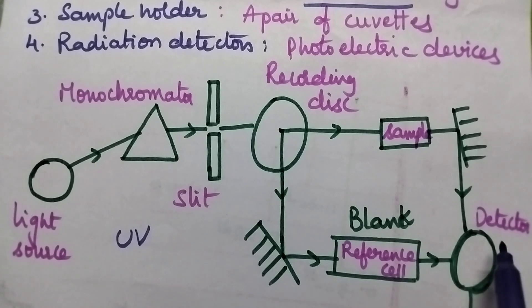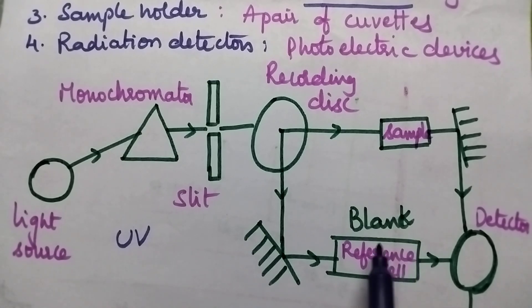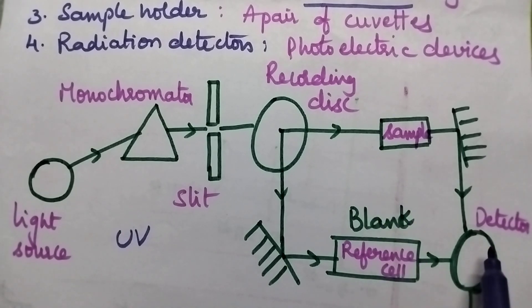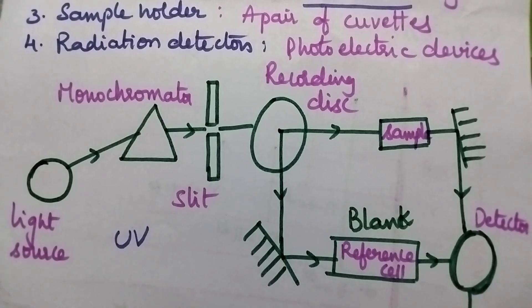Here a detector is present. This double beam spectrophotometer is designed in such a way that if there is any absorption shown by the blank solution, it electronically subtracts the absorption of the blank from the sample solution. Automatically, from the detector, it is possible to identify the percentage of absorbance by the sample solution.